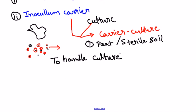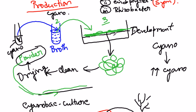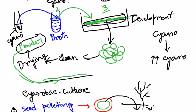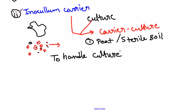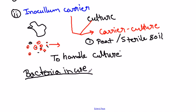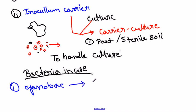All the processes discussed can only be carried out after the development of a typical inoculum. You must produce the inoculum first, then use either seed pelleting or the inoculum carrier technique. Let's now talk about the bacteria that are used. The bacteria in use include, for cyanobacteria: Anabaena and Nostoc.